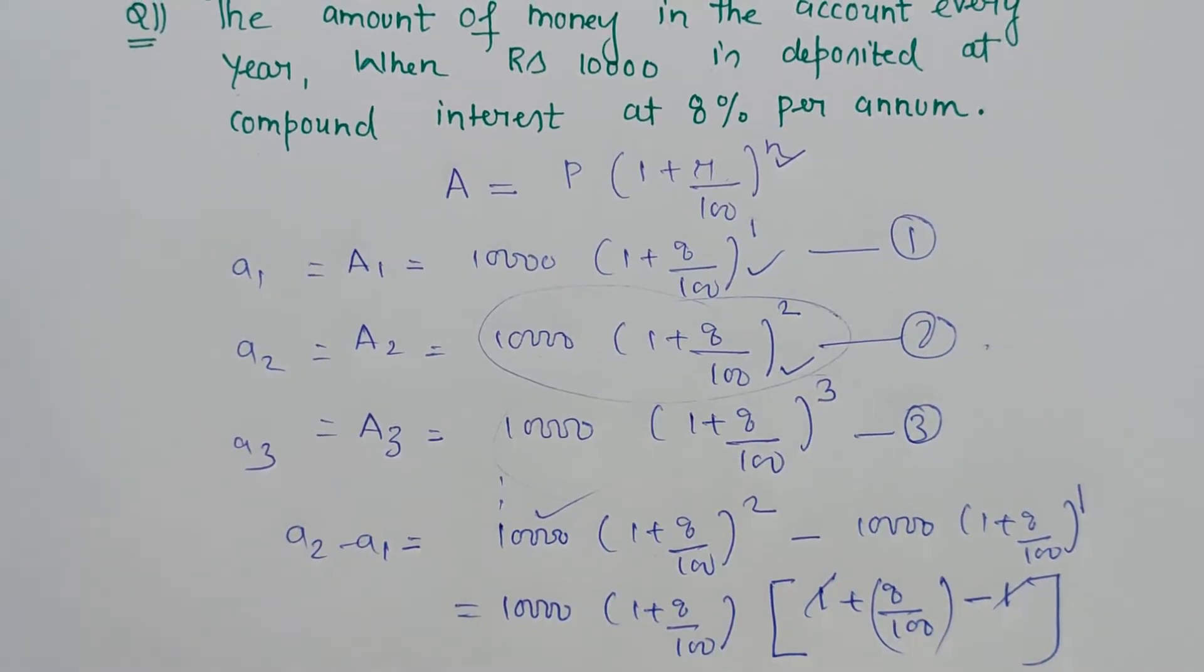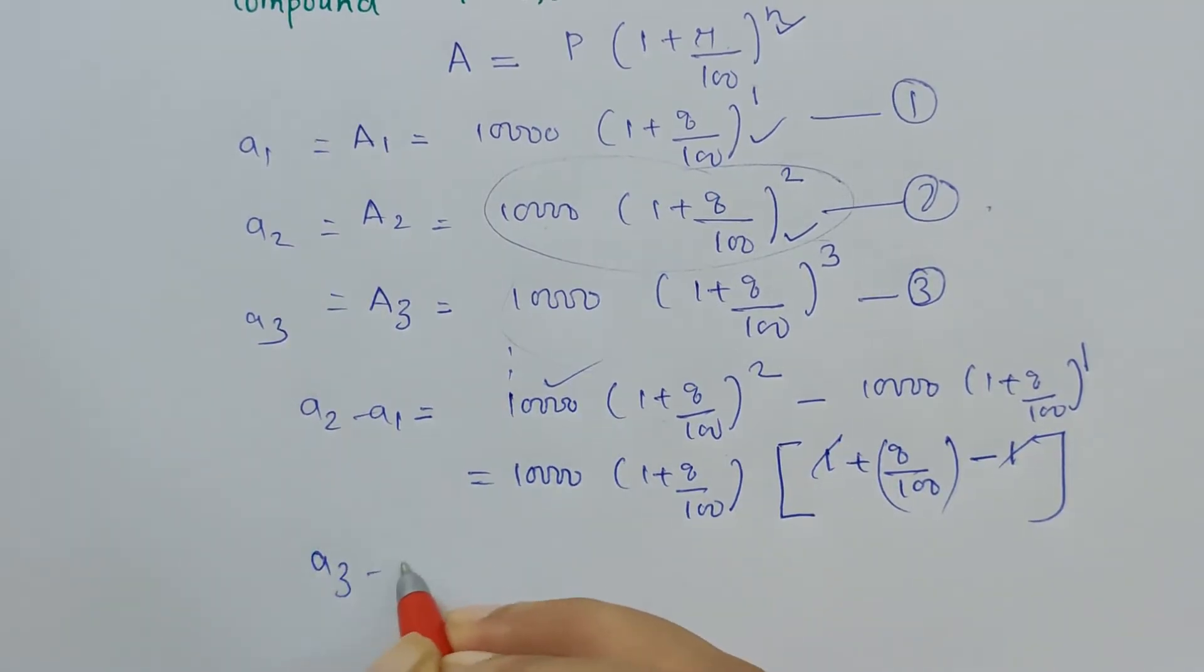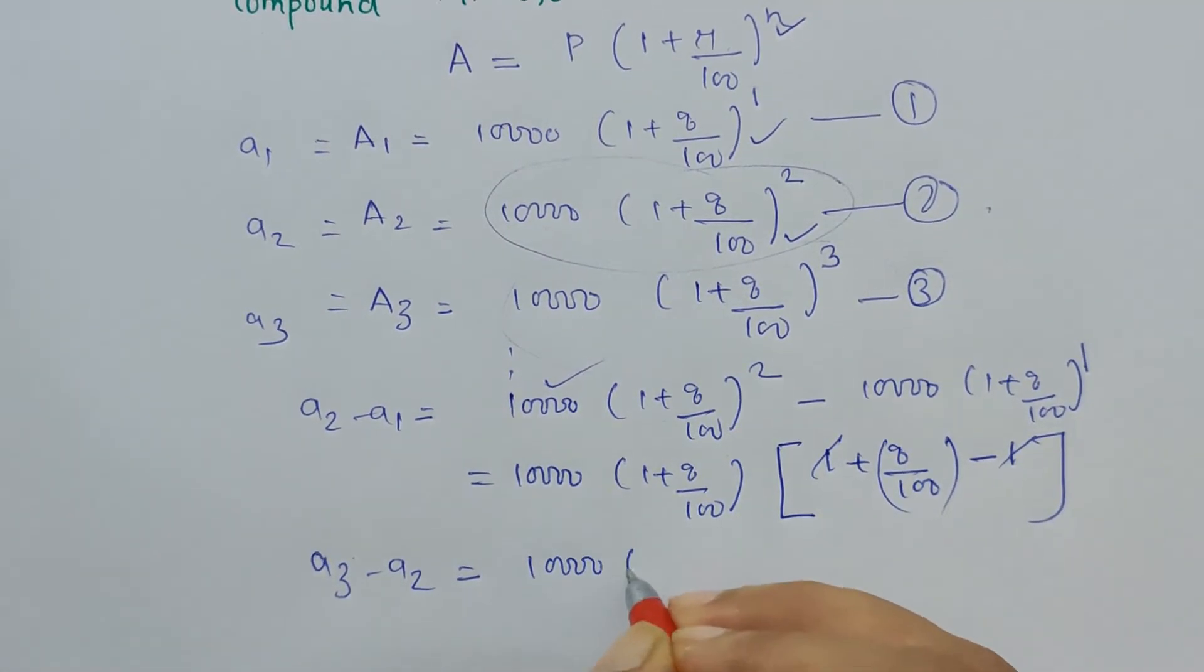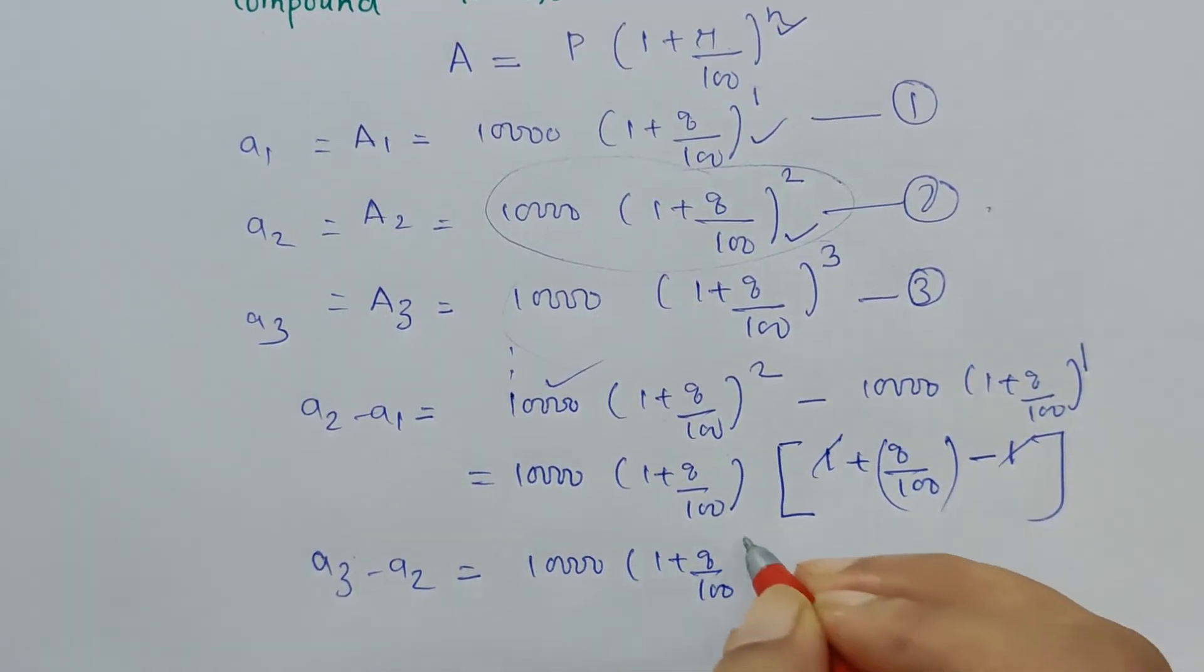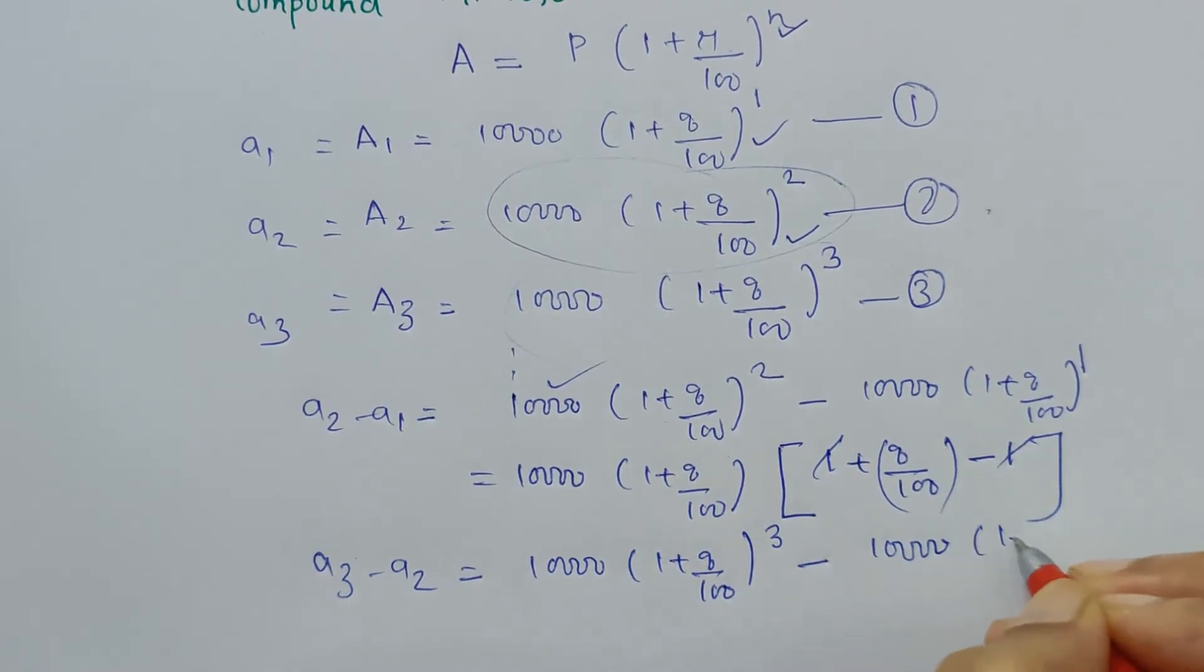So 1 and -1 gets cancelled, only 8/100 is left, which can further be cancelled or leave it as it is—it will be easy to compare for the second situation. So now when we see a₃ - a₂, what do we get?